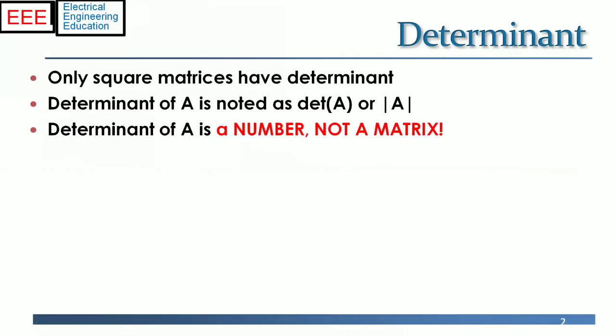In linear algebra, the determinant is a scalar value that can be computed from the elements of a square matrix. The representation is shown where the symbol A is put between two vertical bars, and is a number, not a matrix.